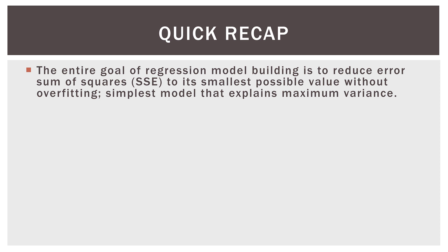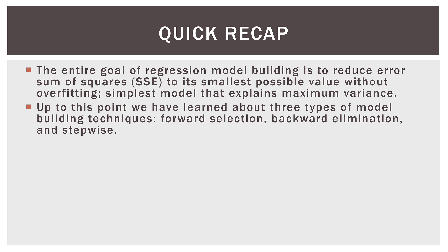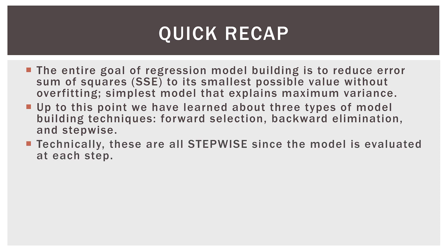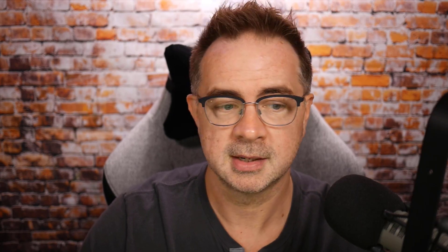The entire goal of model building is to reduce SSE without overfitting — we want to explain the maximum variance in the dependent variable. Technically, forward, backward, and stepwise are all stepwise since the model is evaluated at each step. By their nature, the first three techniques will not examine all possible models. Only best subsets does that. In forward and backward, we enter variables one at a time depending on whether or not they meet the threshold value. In forward selection, once they're in, they're always in; in backwards, once they're out, they're always out. And stepwise can do a little bit of both, but that doesn't mean the process will look at every variable combination. Best subsets does work that way.